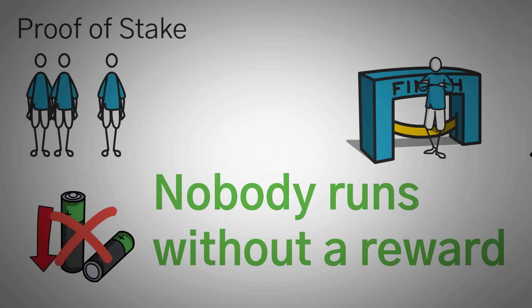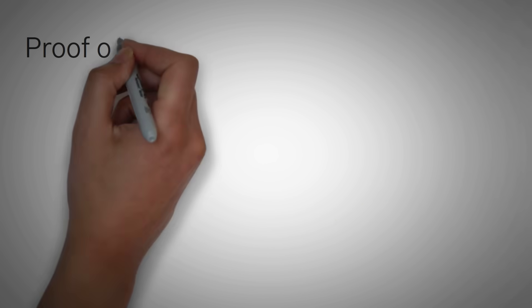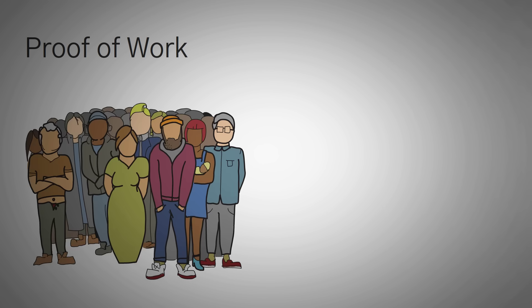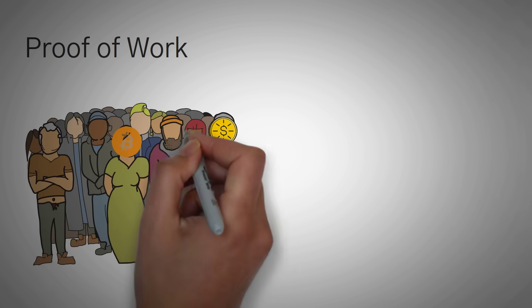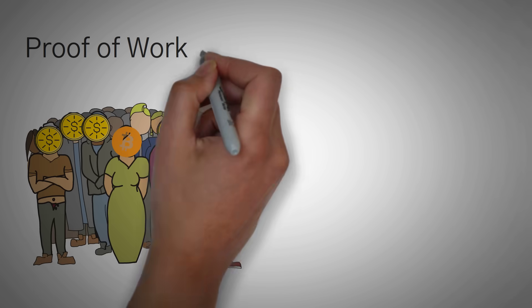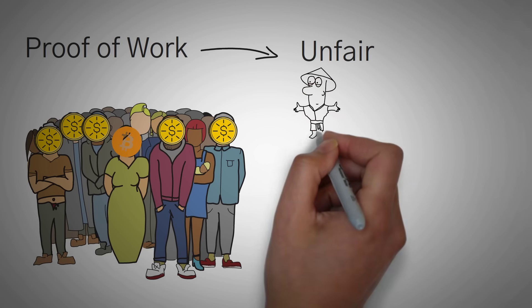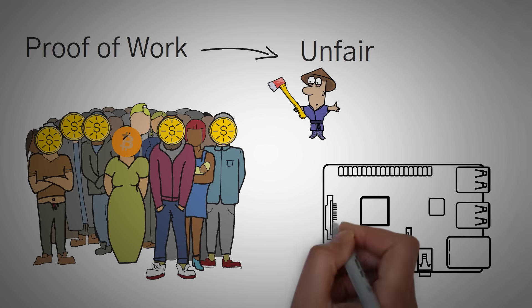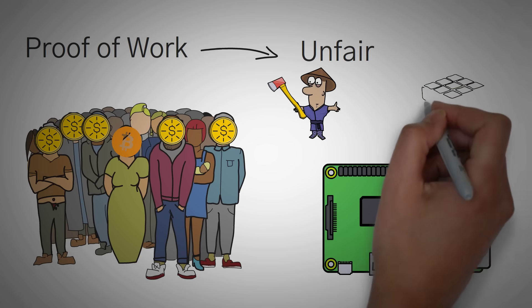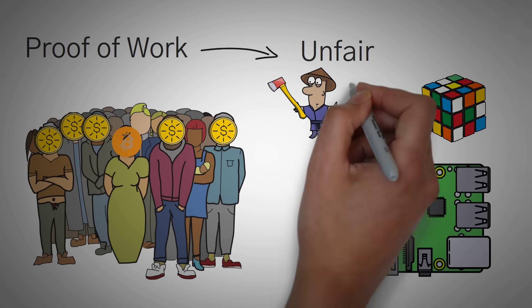And nobody runs without getting a reward. When it comes to coins that use proof-of-work, like Bitcoin, many large mining companies compete to solve a block's reward the fastest. Proof-of-work also isn't fair to the DIY miners who don't have access to very powerful machines or supercomputers that can win the puzzle-solving task the quickest.